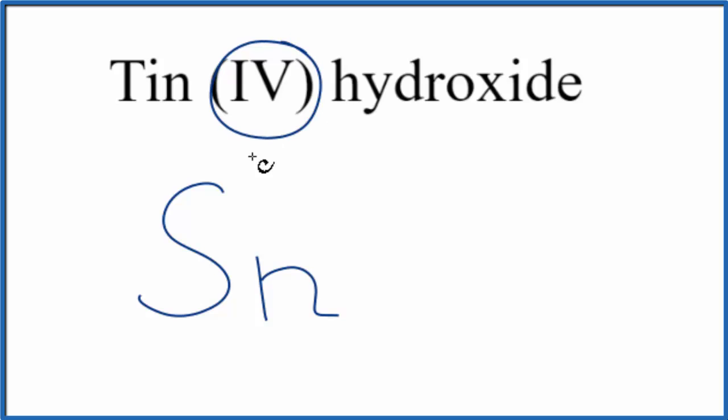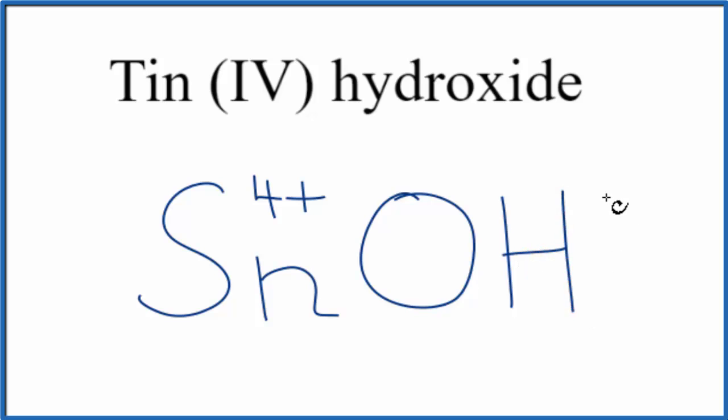And we can see this 4 here. That tells us tin's a transition metal. It has a charge of 4+. The hydroxide here, you really should remember, hydroxide is OH-. This is the hydroxide ion.